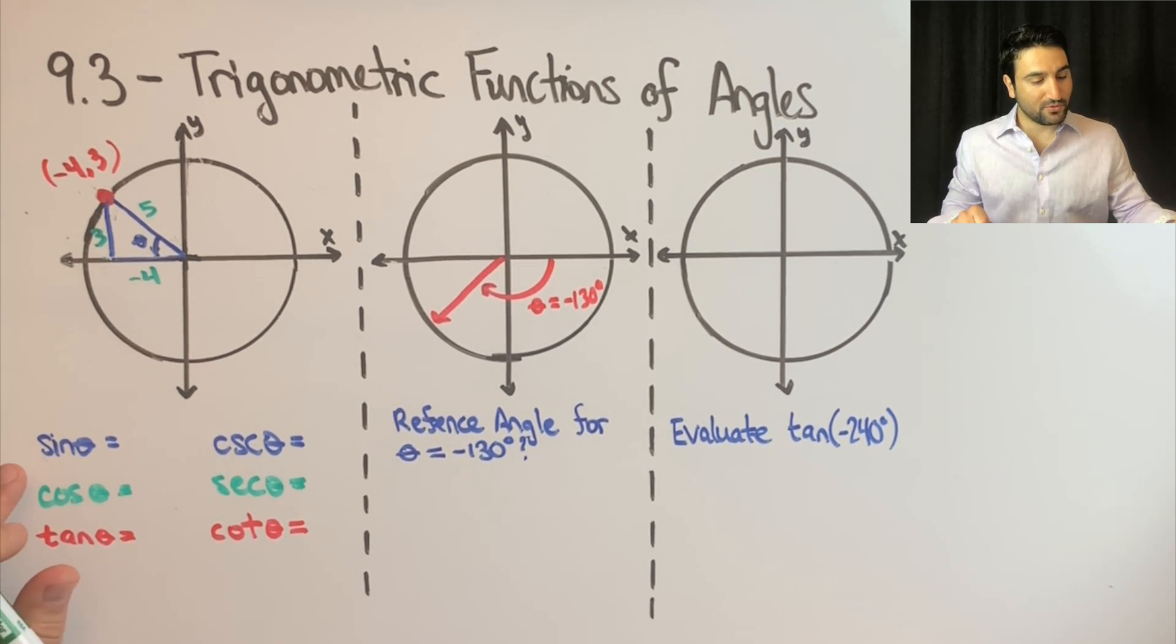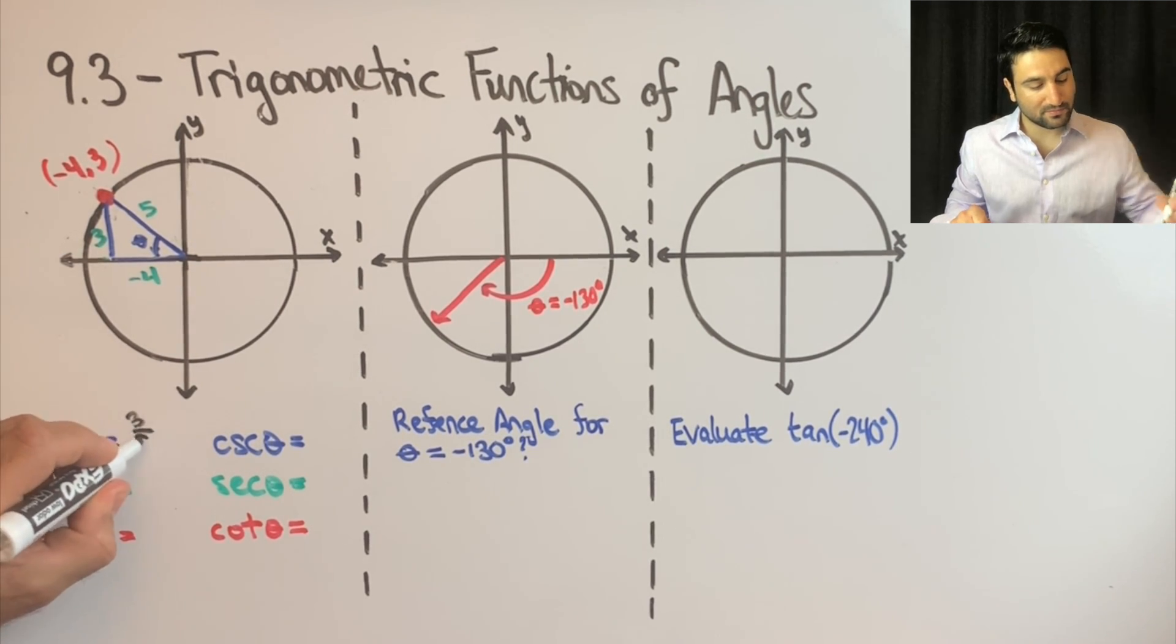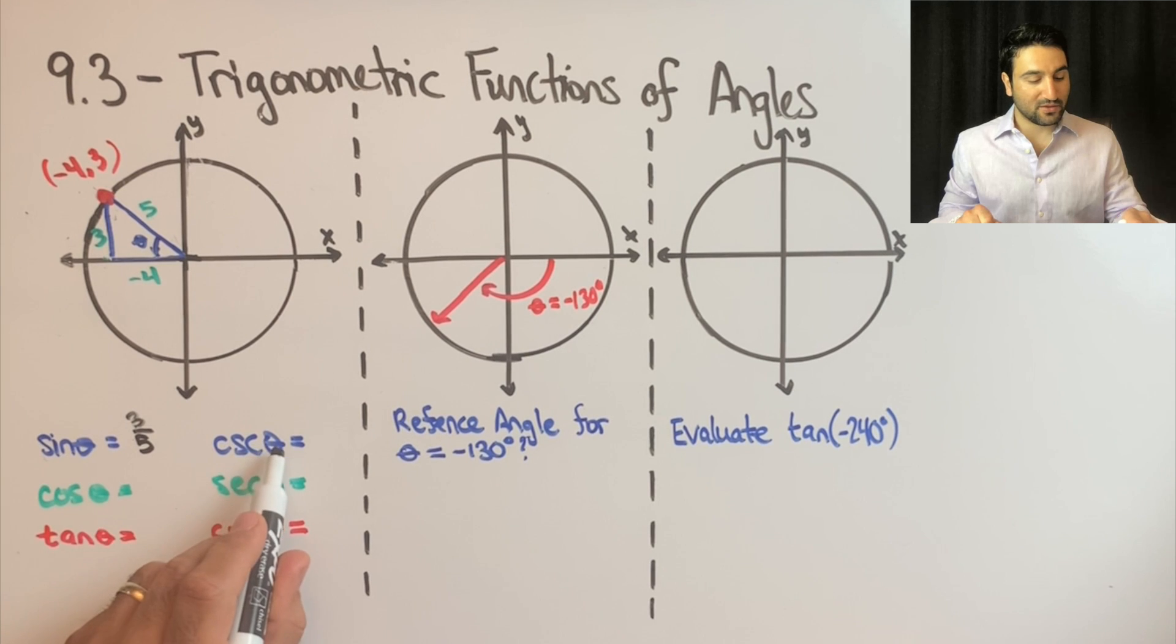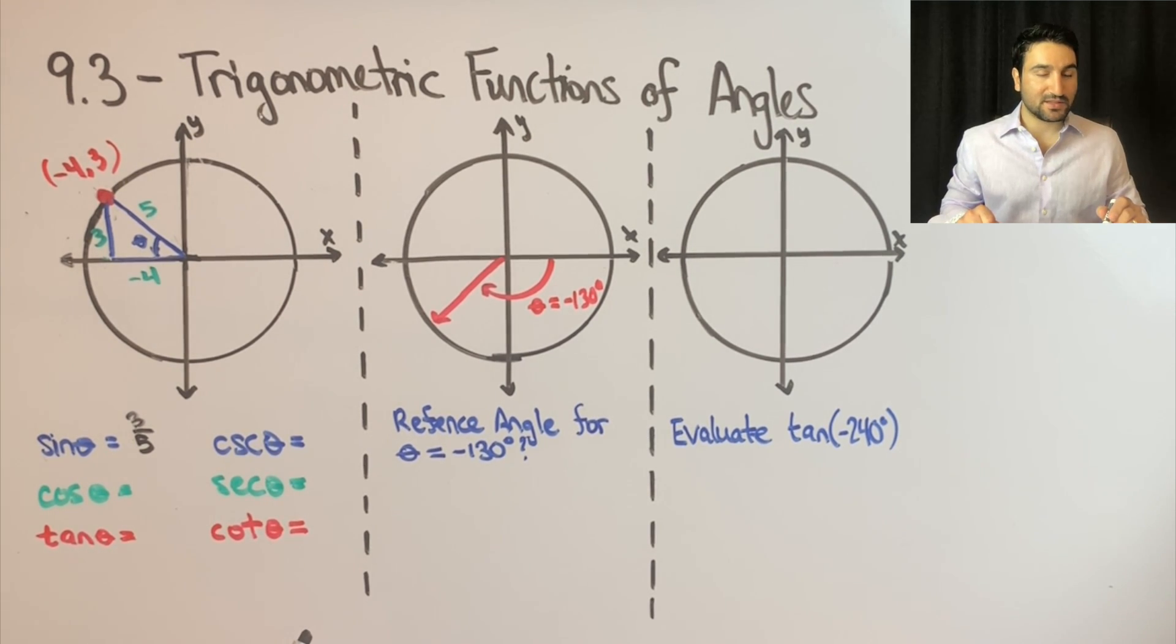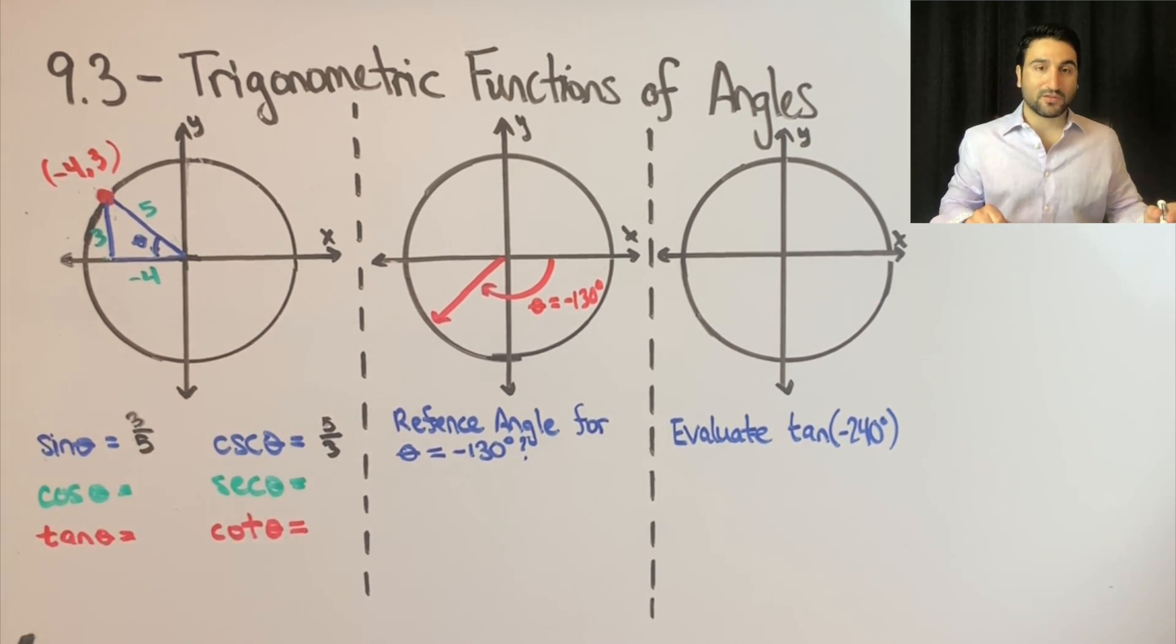Now, in order to do these six trig functions, we are going to use this reference angle here. So sine of theta is SOH. Sine of theta is going to be opposite over hypotenuse. Sine of theta is 3 fifths. And we can complete cosecant easily because it is the reciprocal of sine. It is H over O, so it will be 5 thirds.